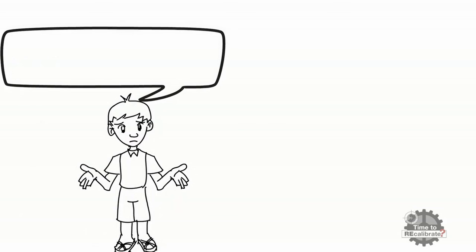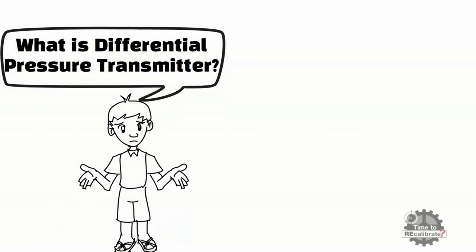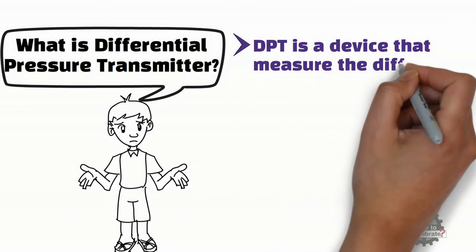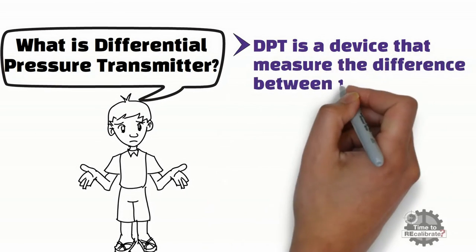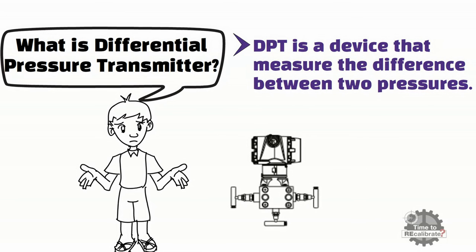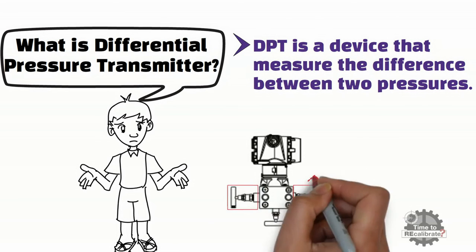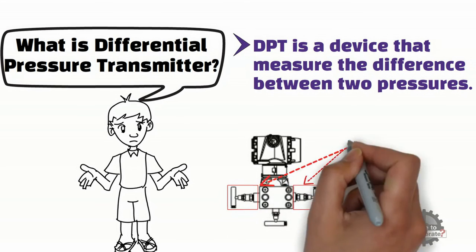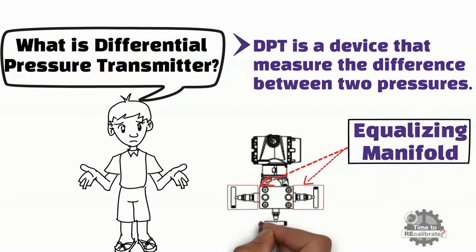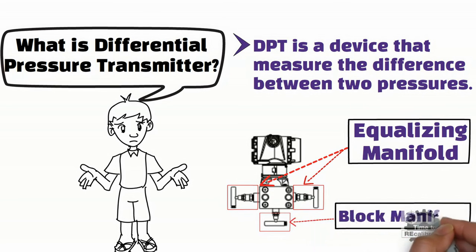First of all, what is a differential pressure transmitter? A differential pressure transmitter is a device that measures the difference between two pressures, and it has three manifolds. Two manifolds are equalizing manifolds and remain open during normal operation. The third is a block manifold and remains closed during normal operation.